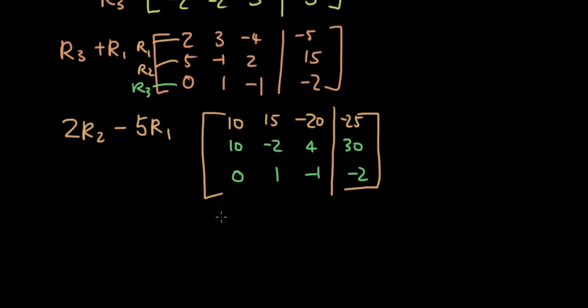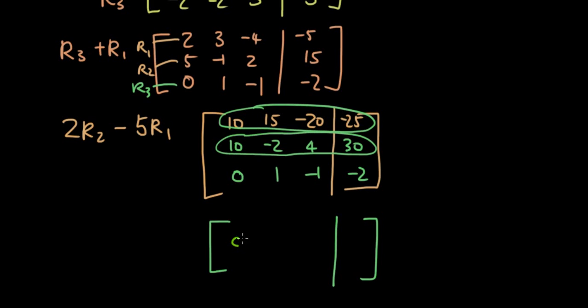So now I'm going to get the second row minus the first row, so 10 minus 10 is equal to 0, negative 2 minus 15 is negative 17, 4 minus negative 20 is 4 plus 20, which is 24, and 30 minus negative 25 is 30 plus 25, which is 55.